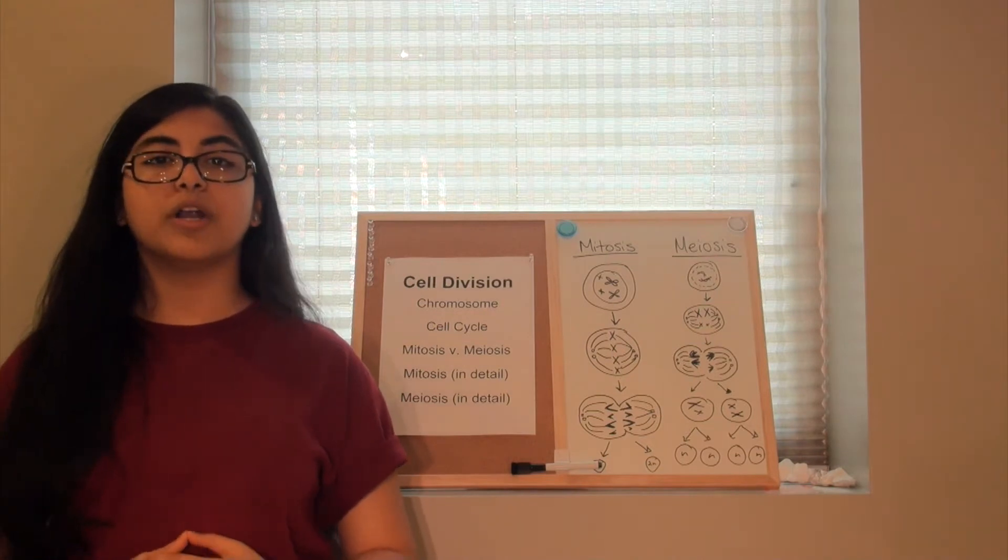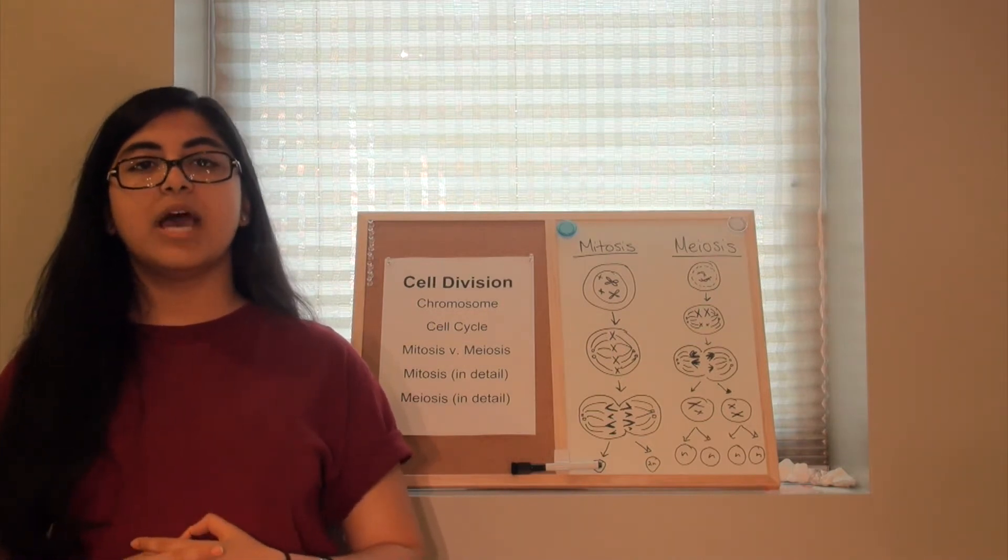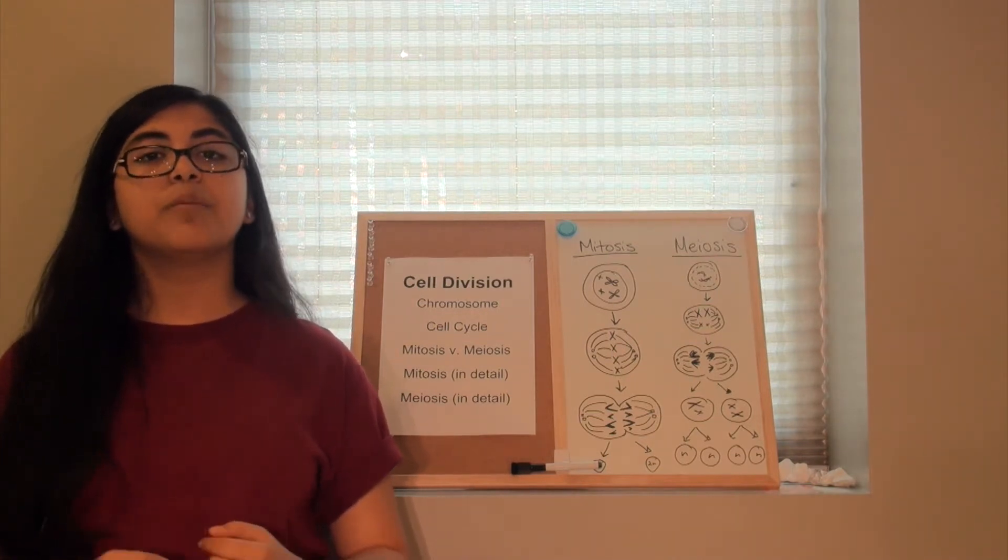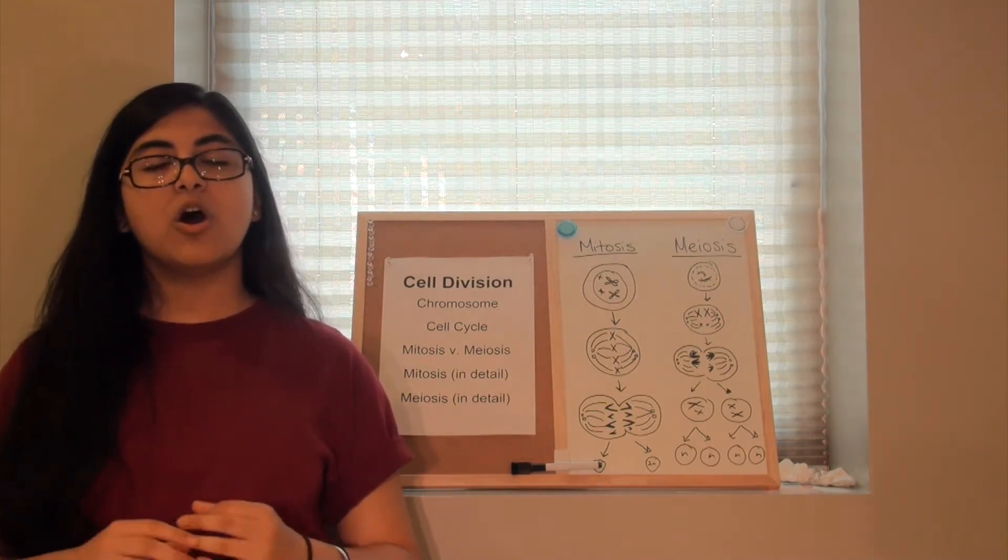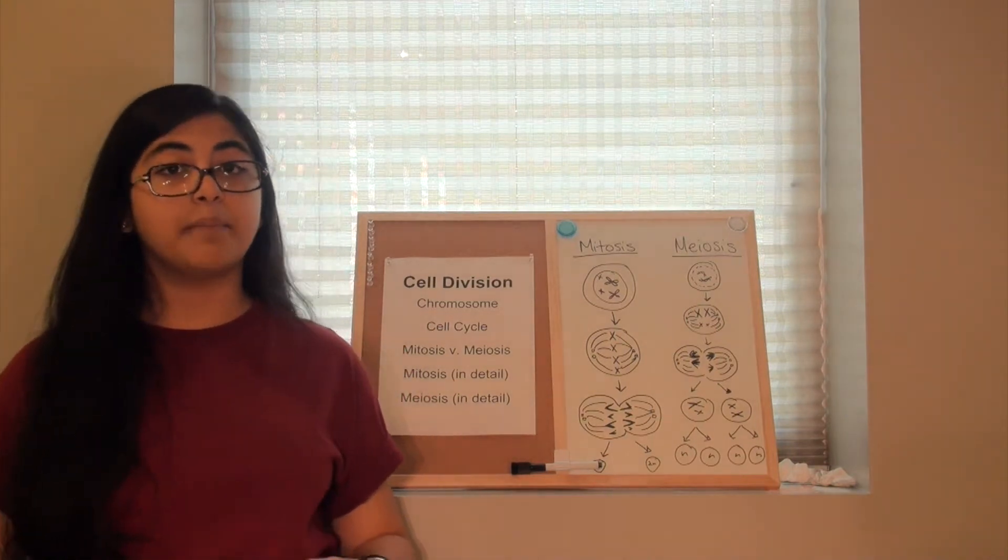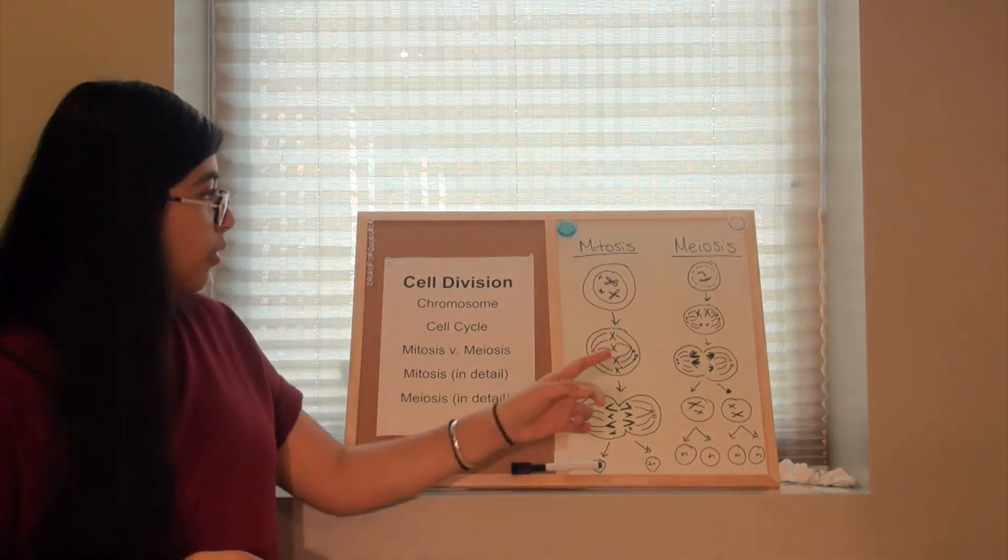Prophase is the longest part of mitosis and is where the nuclear membrane starts to disintegrate and nucleoli disappear. Also centrosomes start to make their way to the opposite sides of the poles.